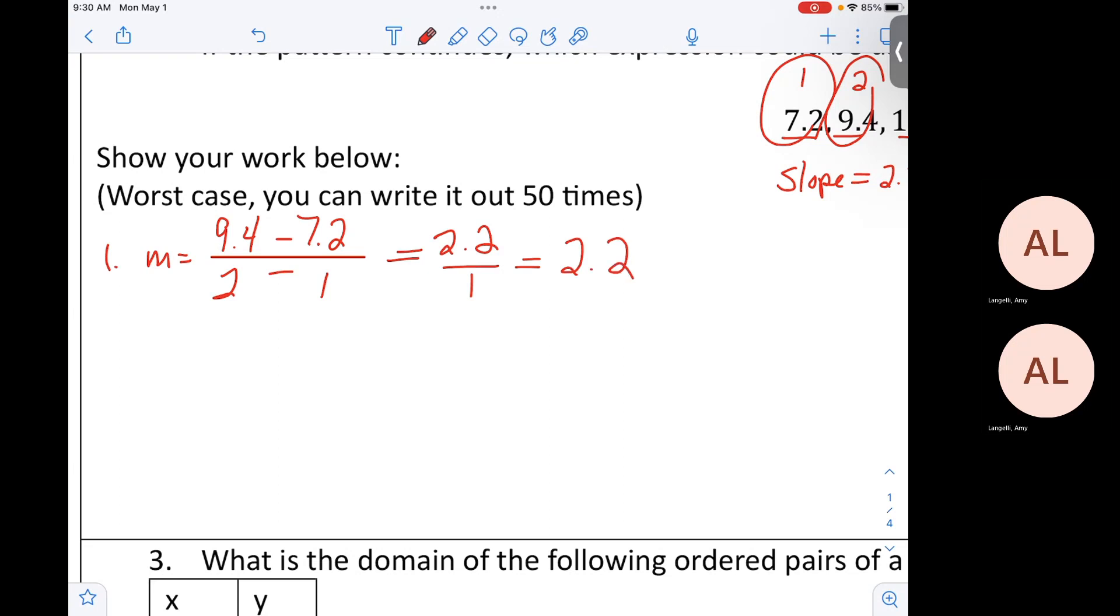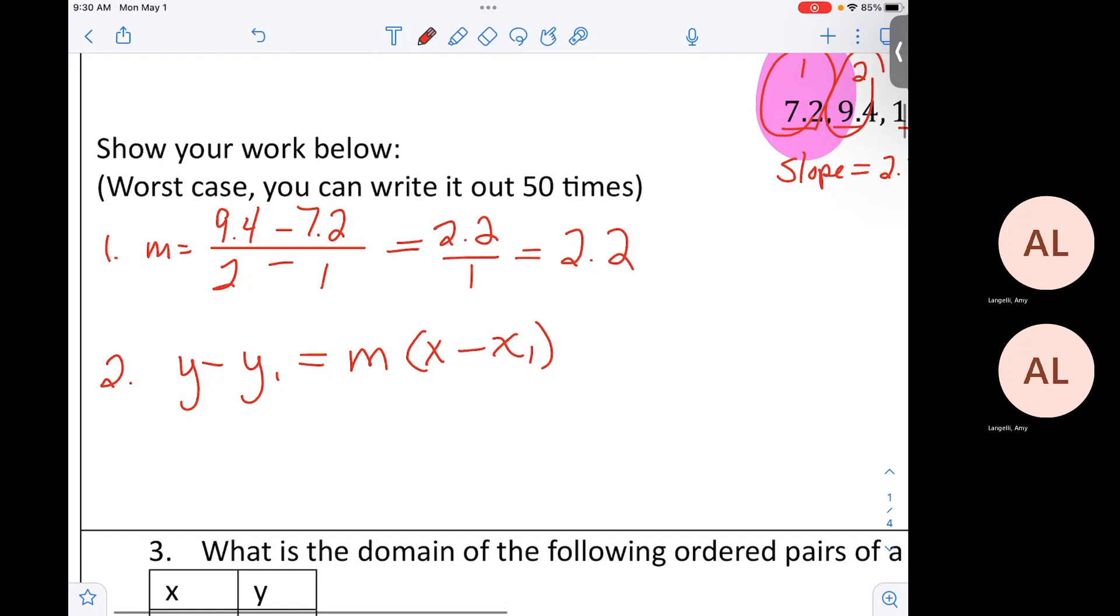If you found the 2.2, you can skip the work of step number one. Step number two. You will have a formula sheet and this formula will be on there. Who can use this and fill in that formula? Y minus 7.2 equals 2.2 times X minus 1.